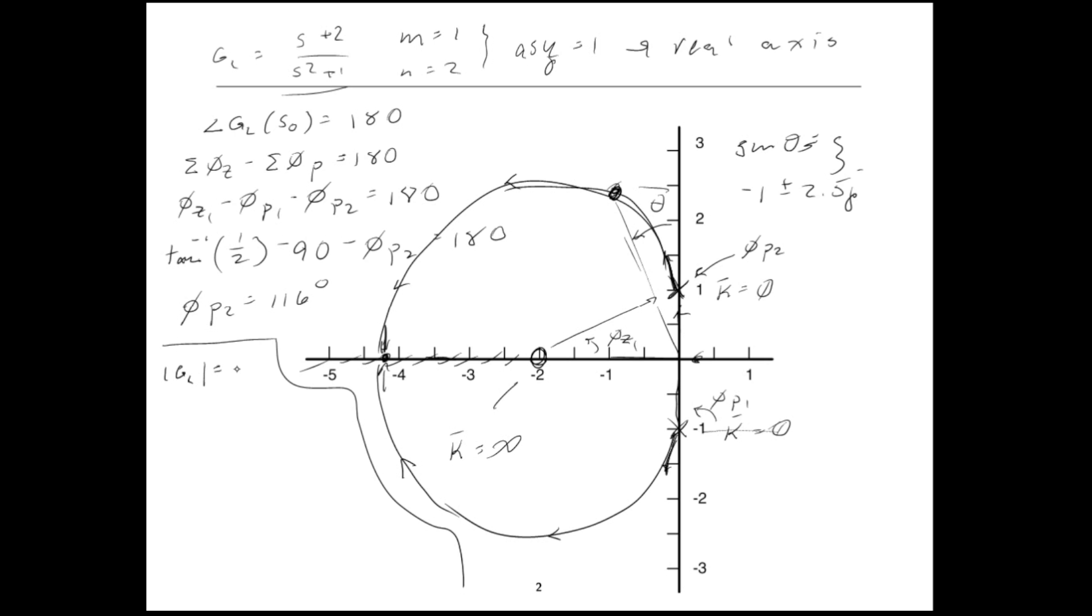It goes like this: the magnitude of the loop transfer function is 1 over K. And the way that I'm going to get the magnitude of that loop transfer function is I'm going to draw little segments like this from all my poles and zeros up to that point, and I'll label them L1, L2, and I'll call that one L3. The magnitude of GL is the product of all those L's associated with the zeros divided by the product of all those L's associated with the poles. So it would be L1 over L2 and L3, and that's equal to 1 over K. Or I could say K is equal to L2 L3 over L1.